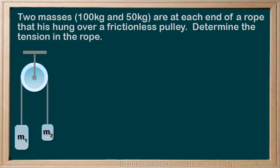Again, we recognize that there are three possible free body diagrams here. The first one, the 100 kilogram mass. We have Fg pointing down, the force of gravity, and T, the force of tension from the rope, pulling up.